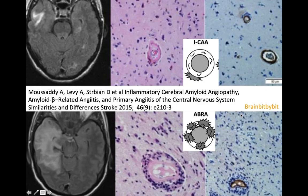These are two other histology-proven cases. The first is inflammatory CAA with abnormalities in the right temporal lobe. You can see a normal vessel wall and an immunostain showing amyloid in the vessel wall. The second is a case of ABRA, where the vessel wall is very abnormal with amyloid and transmural inflammation of the vessel wall.